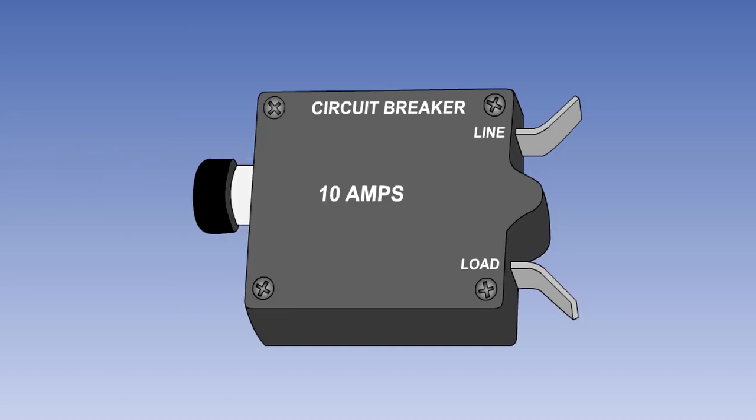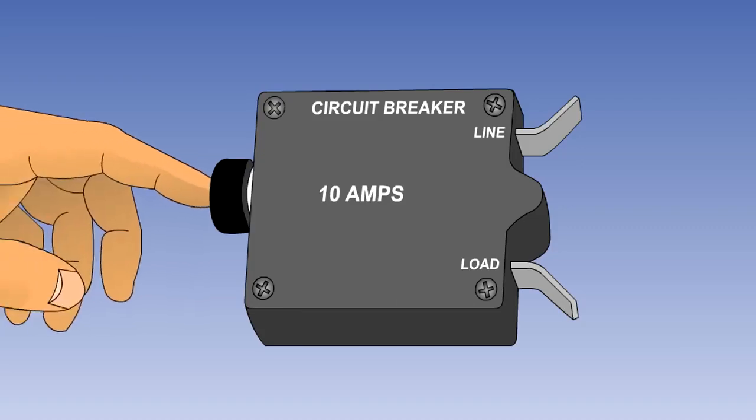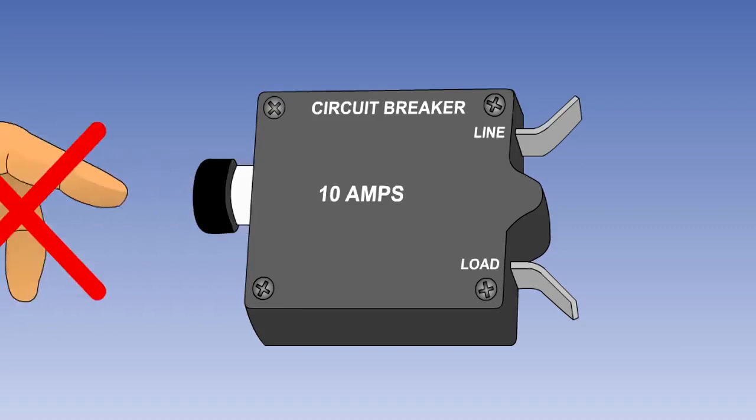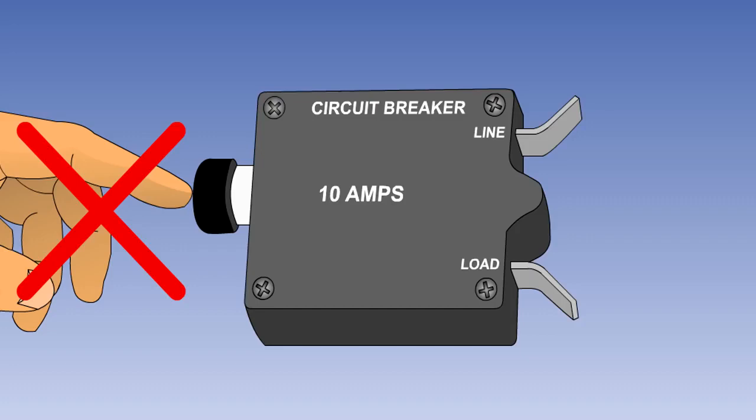Circuit breakers can be tripped and reset any number of times, but remember that a tripped circuit breaker should only be reset once. If it trips again, the fault must be dealt with before another reset attempt is made.